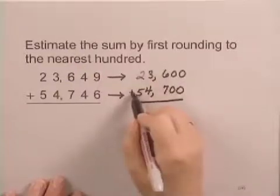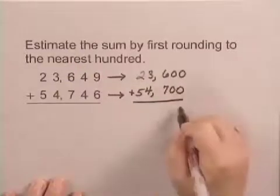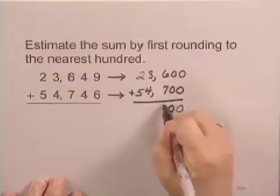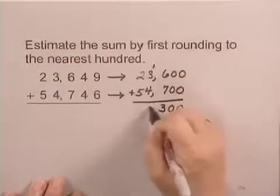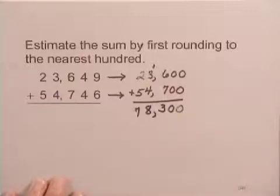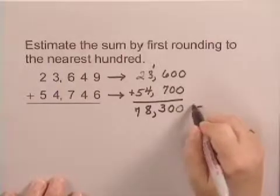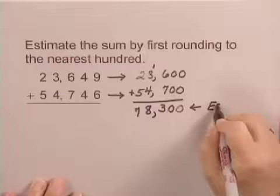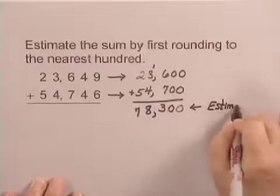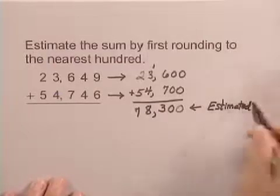Then I'm going to add these rounded numbers, and I get 78,300. This is the estimated sum.